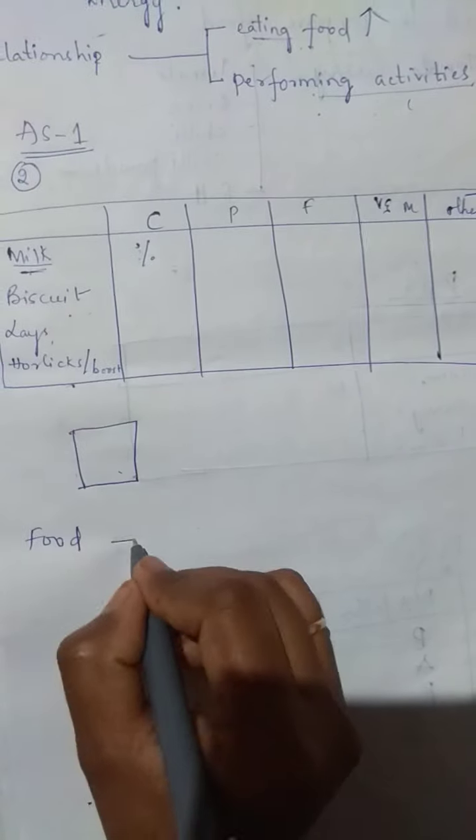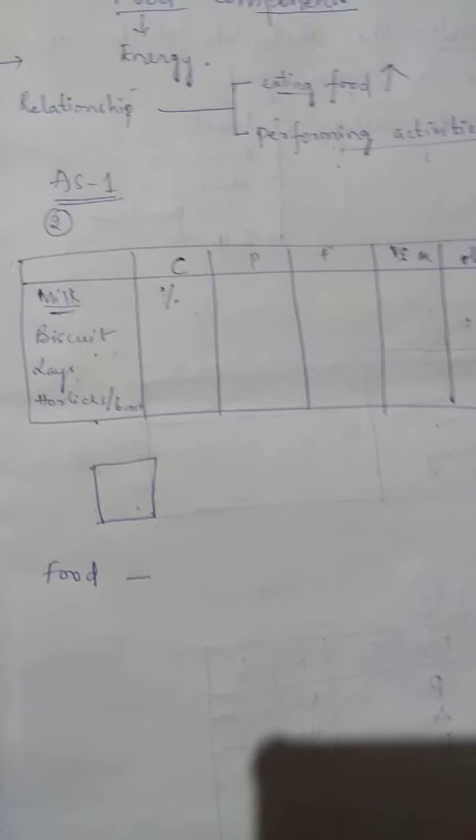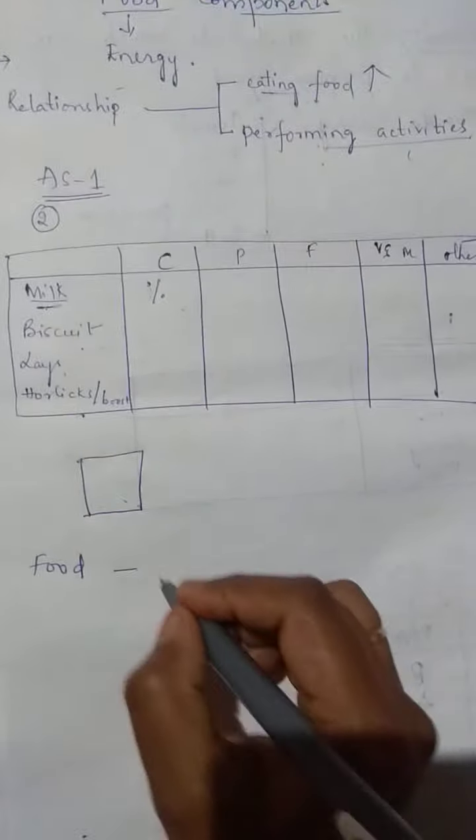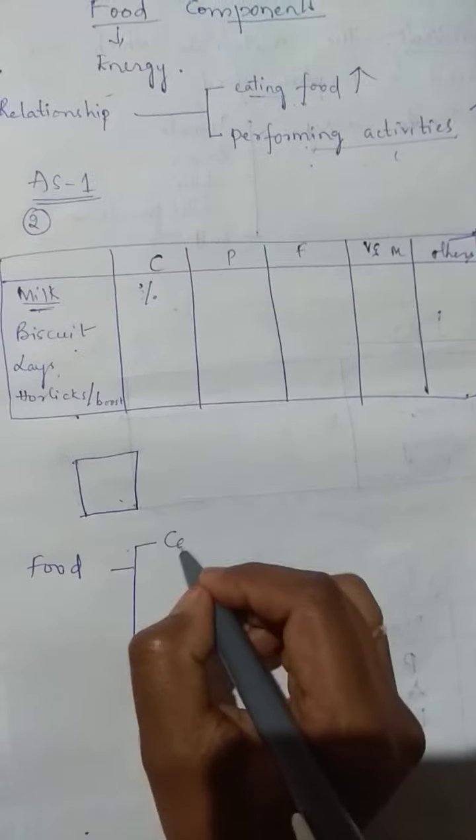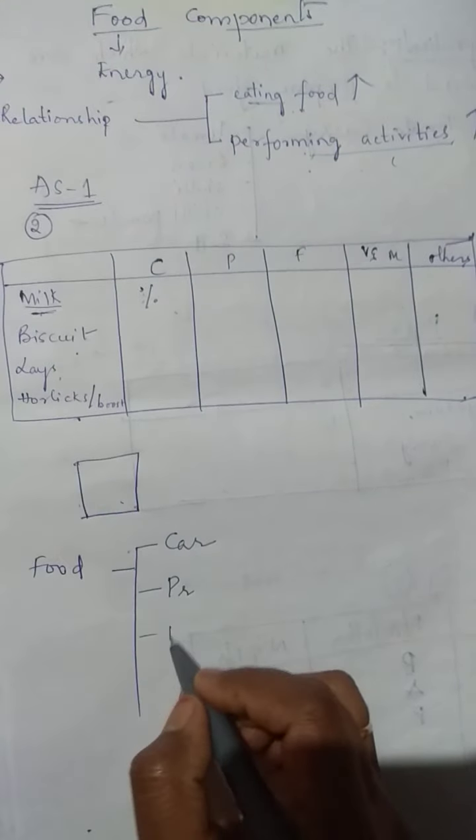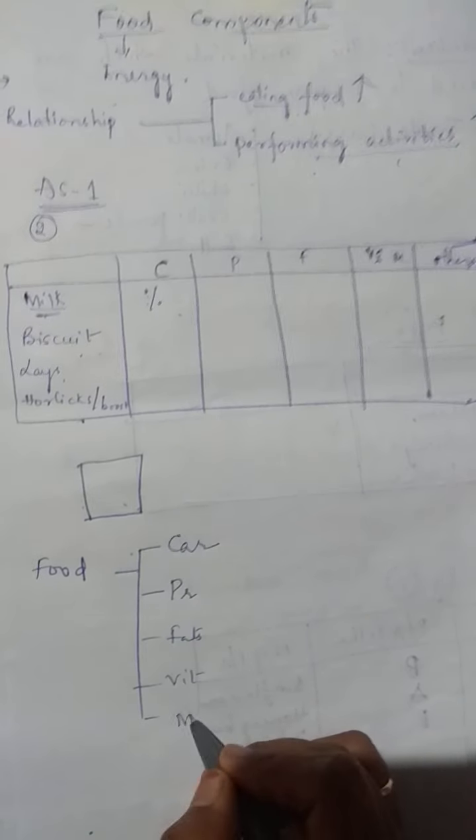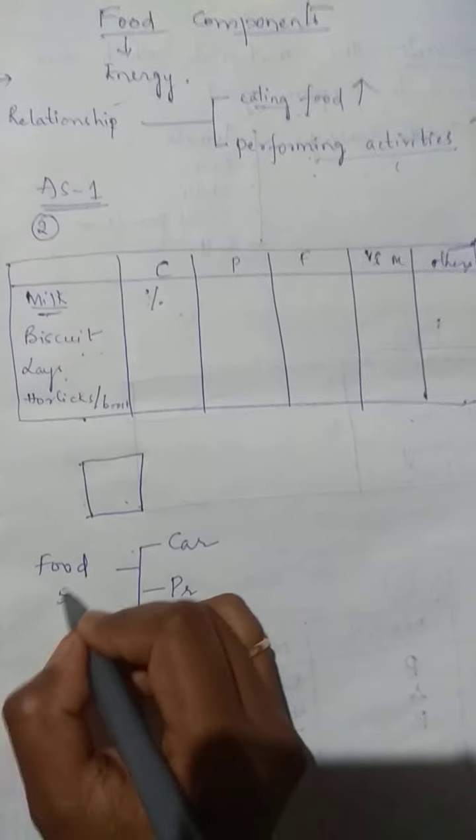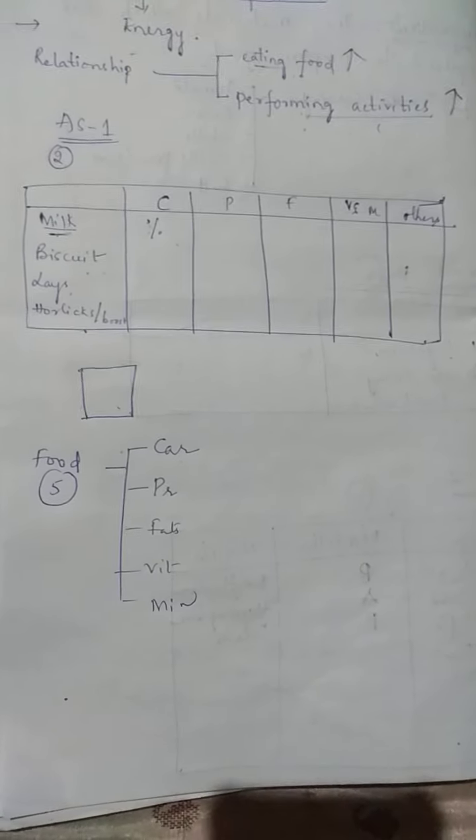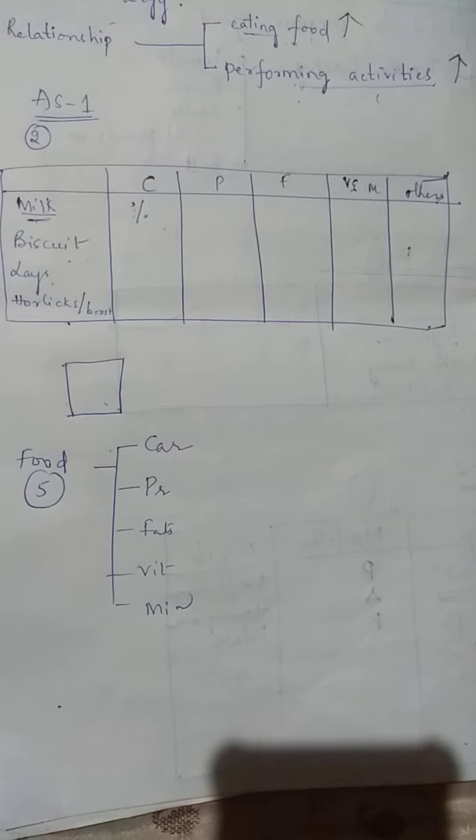Next. Our food has five important things. What are they? Carbohydrates, proteins, fats, vitamins and minerals. Five important things which are present in our food are carbohydrates, proteins, fats, vitamins and minerals.